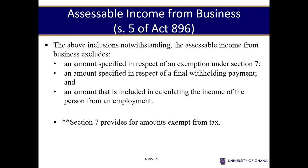For example, if you pay final withholding tax on some revenue you expect to receive, then the amount withheld will not form part of your income from business, because you've already paid the due tax on that portion of the income. Also, an amount that is included in the calculation of income from employment — if you have already added some amount to your employment income, you will not again add the same to your business income.